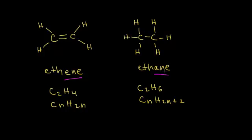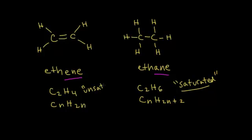We can see that ethene doesn't have as many hydrogens as ethane. Ethane has as many hydrogens as is possible for these carbon atoms, so ethane is said to be saturated with hydrogens — it can't get any more. Ethene only has four hydrogens, so it could actually add two more, making it unsaturated. In a future video, we'll see how saturated and unsaturated relate to the saturated and unsaturated fats everyone has heard of.